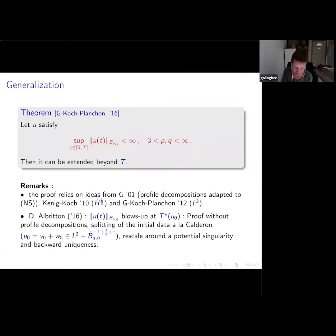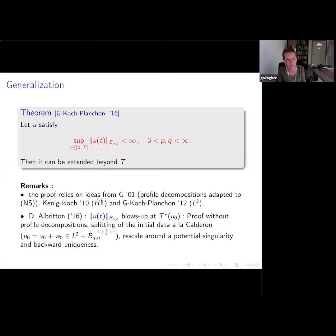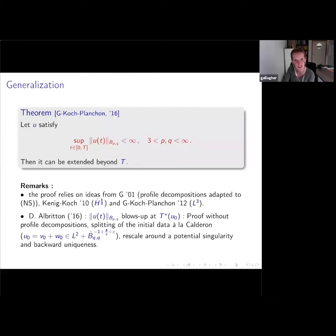A little bit later, with Carron and Planchon, we were able to remove the restriction on q, getting all p's and q's for the Besov norms. The proof uses profile decompositions — it's a bit less elegant but follows the roadmap that Kenig and Merle gave for the Schrödinger equation. I also want to mention the paper by Dallas Albritton, at the same time, who proved essentially the same results with a much nicer proof that doesn't use profile decompositions. He splits the initial data just like Calderón into L^2 plus something nice, then uses the rescaling properties and backward uniqueness of Escauriaza-Seregin-Šverák, and proves the results for all p's and q's.